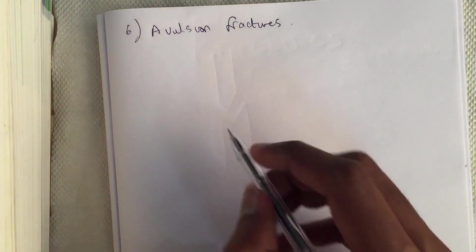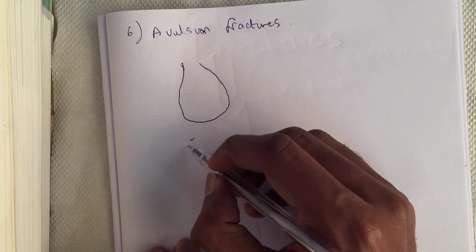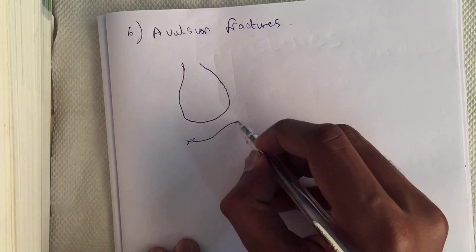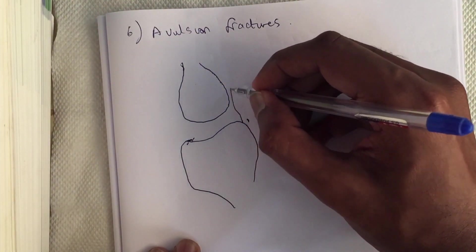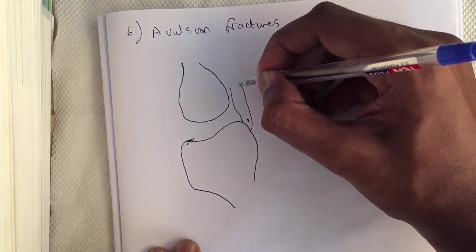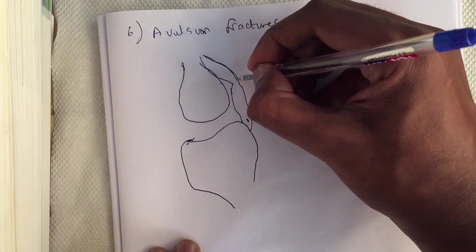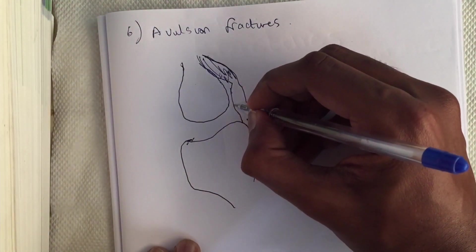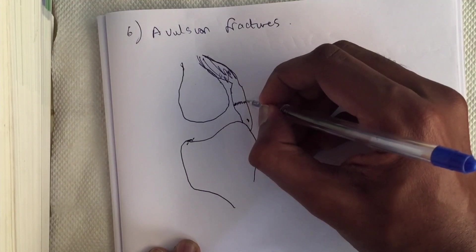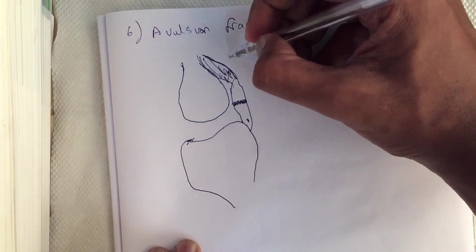For example, the patella tendon with the lower pole of patella. This is the femur, this is the tibia, and this is the patella. The fracture will occur when the muscle gets pulled upwards.